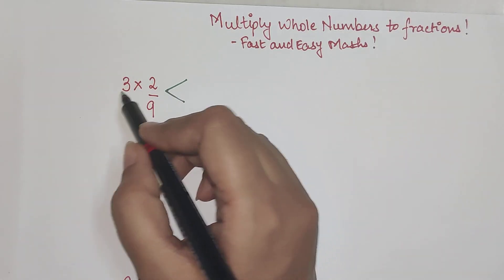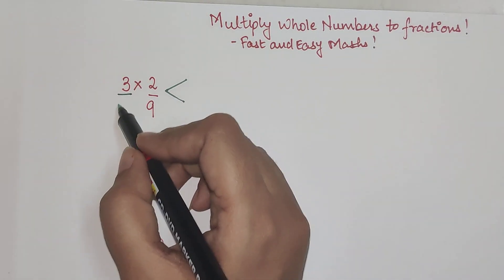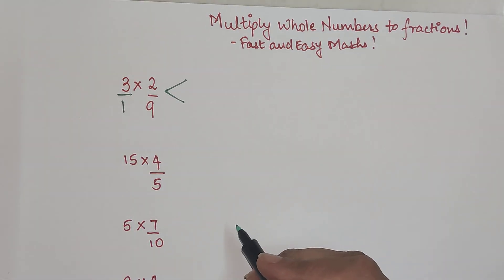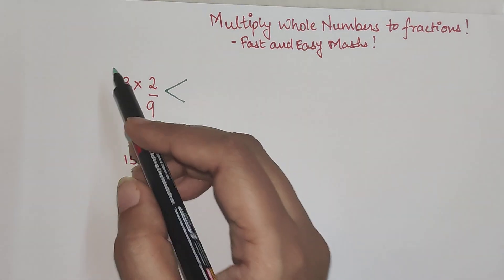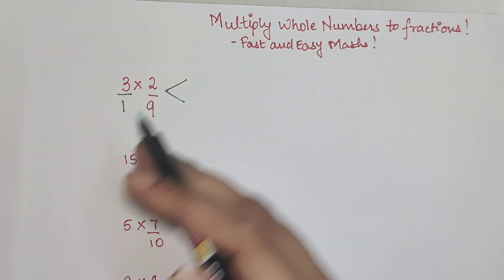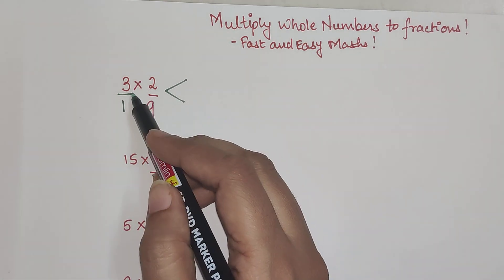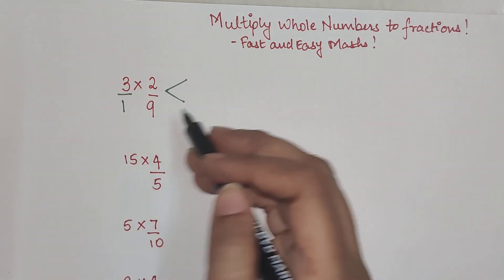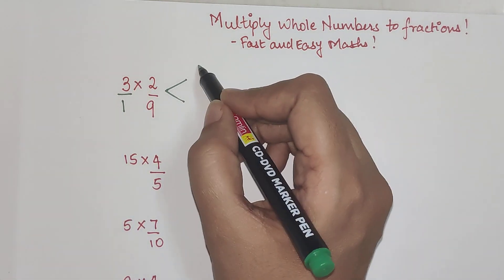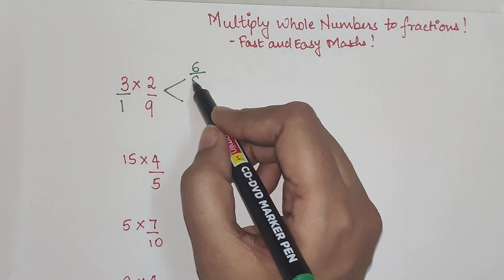The first way is just multiply this together. So 3 into 2, because whenever you have a whole number you have to consider the denominator to be 1. So then you just act as if this is also a fraction. So when you multiply the two fractions, you just have to multiply the numerator and then multiply the denominator.